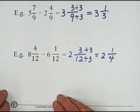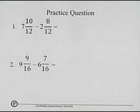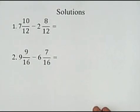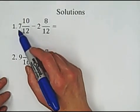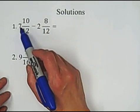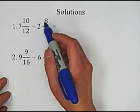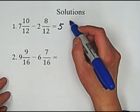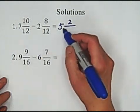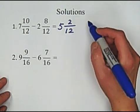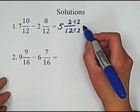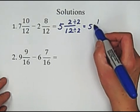Now, it's your turn to have some practice. Solutions. Subtract 2 mixed numbers. Subtract the whole number portion. 7 minus 2 equals 5. Subtract numerator. 10 minus 8 equals 2 over 12. Keep the denominator unchanged and simplify. Divided by 2. We got 5 and 1 over 6.